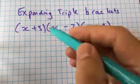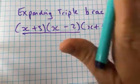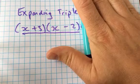The first thing I would do is just look at the first two brackets and expand them as you do when you're expanding just double brackets. So I cover that third one there.